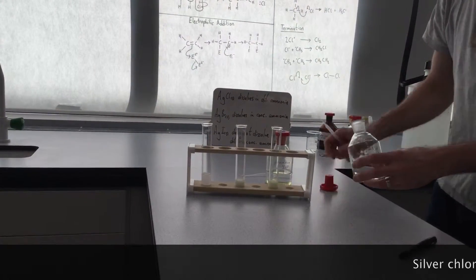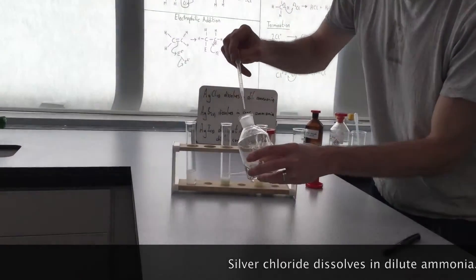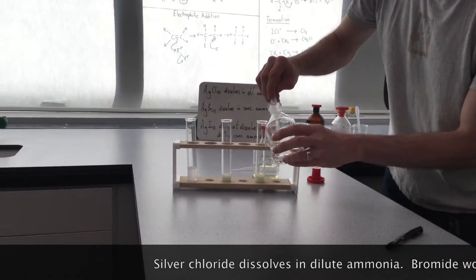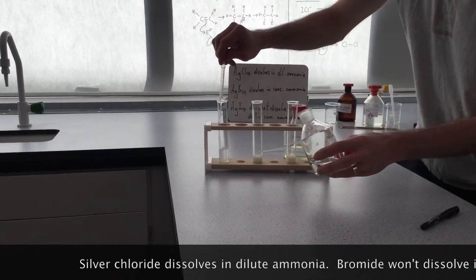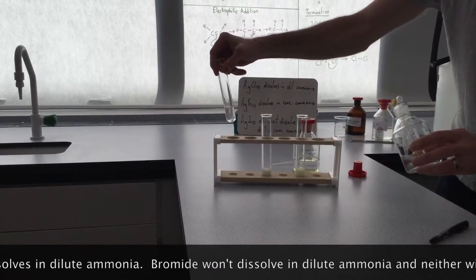And if you add dilute ammonia, first of all, as a test, what should happen in dilute ammonia is that the chloride should redissolve and form a colorless solution, which we've got there.